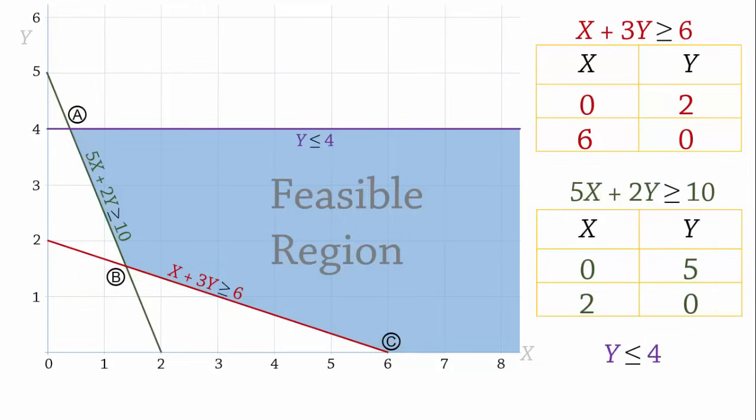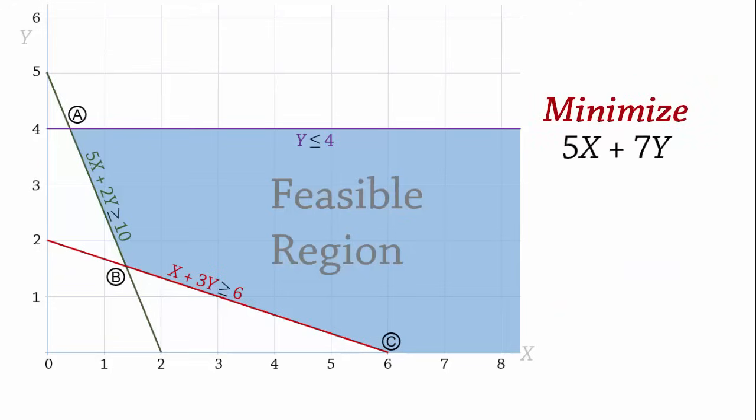Recall that the objective function is to minimize 5x plus 7y. The corner point that gives us the minimum value of the objective function is the optimal point. Instead of testing every single point, we will use the objective function line approach. We begin by setting the objective function to any number of our choice. To make the process easy, we can simply multiply the coefficients of x and y.